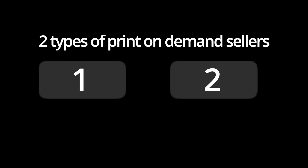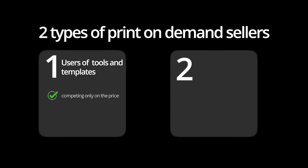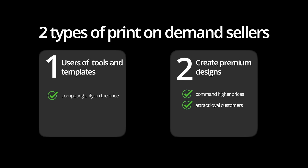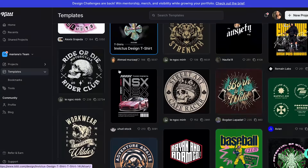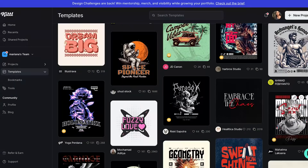There are two types of print-on-demand sellers: those who use the same tools and templates as everyone else, competing only on price, and those who create premium designs that command higher prices and attract loyal customers. So which one would you rather be? This is where Kito comes in. Unlike Canva, Kito has been built specifically with vintage, retro, and custom typography designs in mind — the exact styles that are dominating the print-on-demand market right now. Let me show you some of Kito's standout features that make it perfect for print-on-demand design.